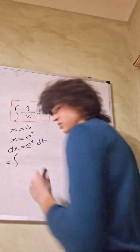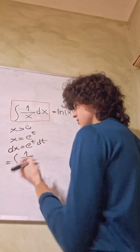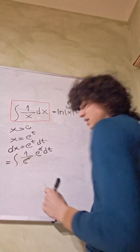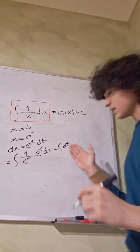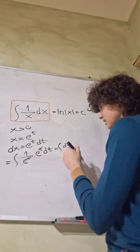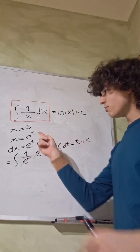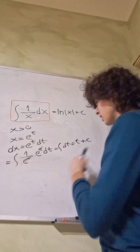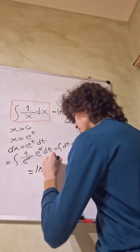We substitute this back into our integral and get 1 over e^t, because x equals e^t, times dx which is e^t dt. We can simplify e^t and e^t, and we get the integral of 1 dt. This integral is just t plus c. Now what is t? We know that x equals e^t, so taking the natural log of both sides gives us t equals the natural log of x. So this is the natural log of x plus c.